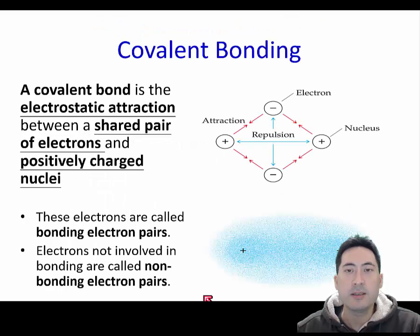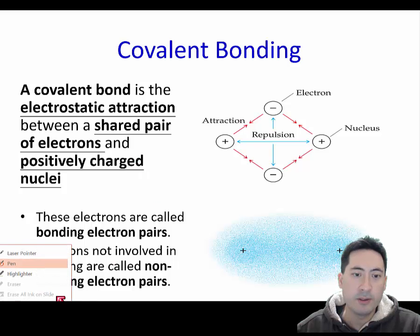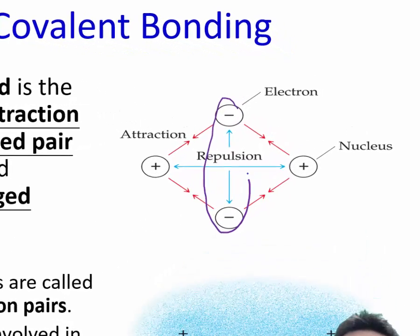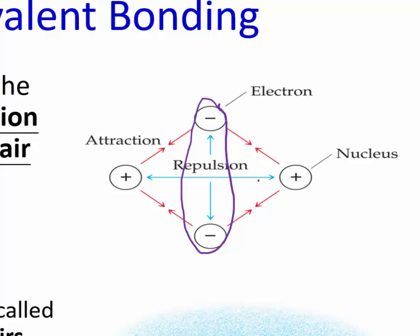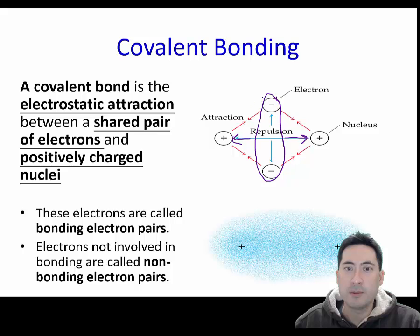This is the definition of a covalent bond. Once again, you can see that we have the word electrostatic attraction. A covalent bond is where we have an electron pair, and both nuclei are trying to grab onto it. So that means it's locked in position, and that means that it won't conduct electricity, and it will have a very high melting and boiling point.